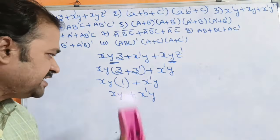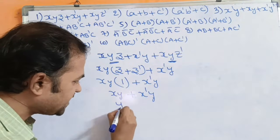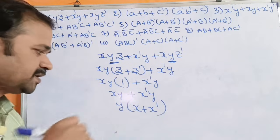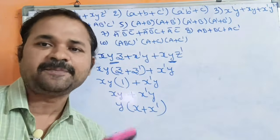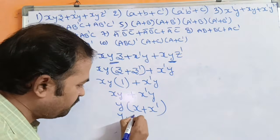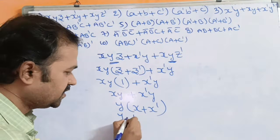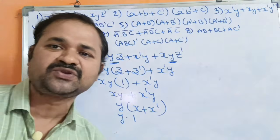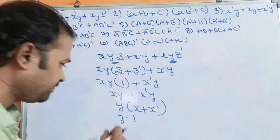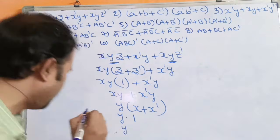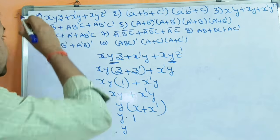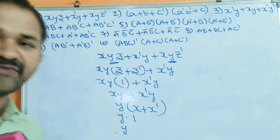Observing these two terms, y is common. So we get y(x + x'). We have the formula a + a' = 1, so y·1 = y. Anything multiplied by 1 equals that value only. So the minimized expression for the first problem is y.